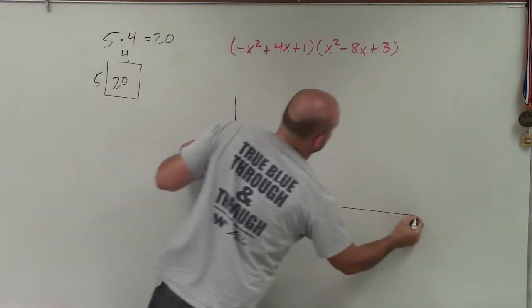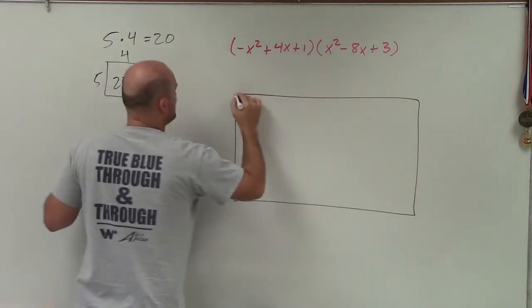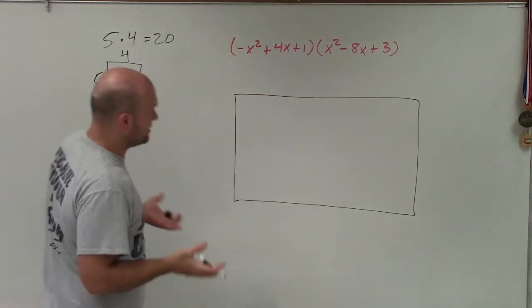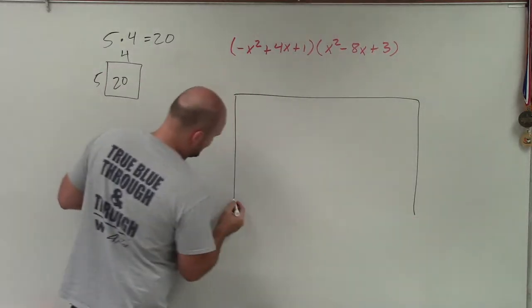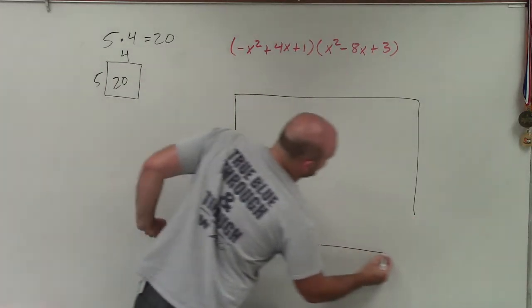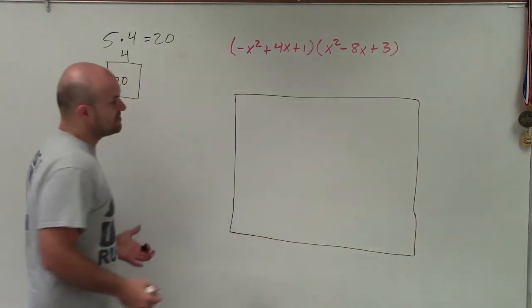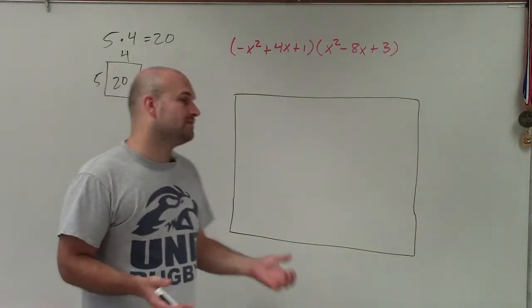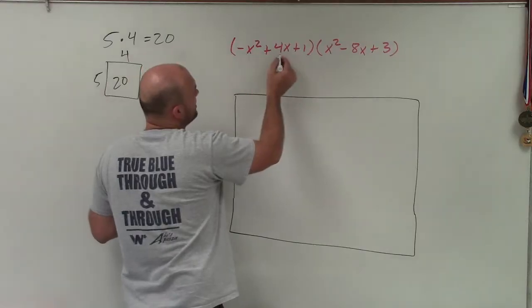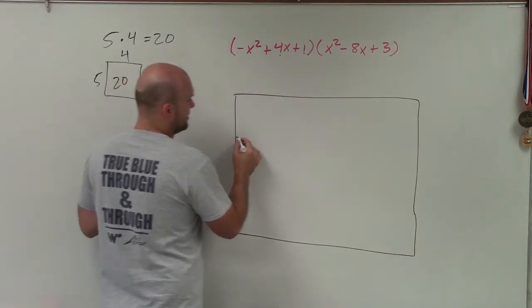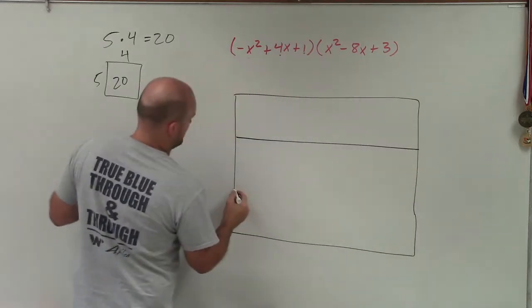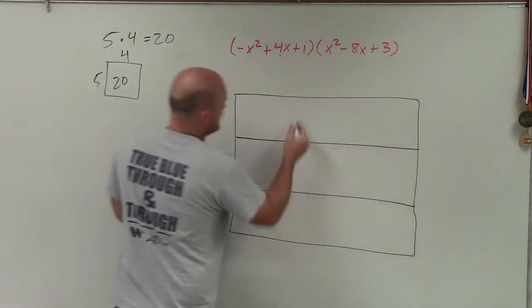So what I'm going to do is I'm going to create a nice big box here. And what I'm going to do is here's going to be my rectangle. Now, inside of this rectangle, I'm not multiplying numbers, I'm multiplying polynomials. So I want to make sure I can separately represent each one of the terms. So I'm going to break up each side into how many terms I have, which in this case is 3.